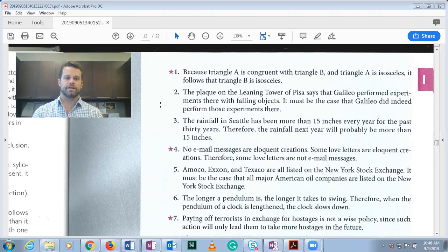Number two: The plaque on the Leaning Tower of Pisa says that Galileo performed experiments there with falling objects. It must be the case that Galileo did indeed perform those experiments there. They're trying to fool you by saying it must be the case, acting as if it follows necessarily, but it doesn't follow necessarily—it follows probabilistically.